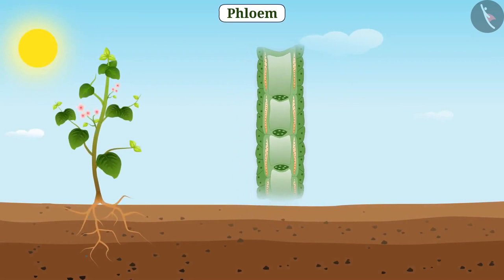The phloem transports the food formed in the leaves to different parts of plants. That is, the phloem transports food in both upward and downward directions.